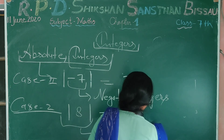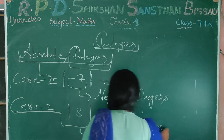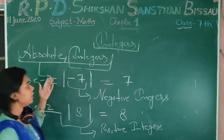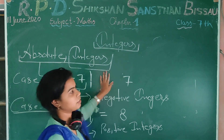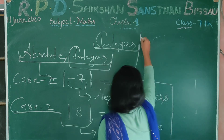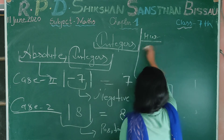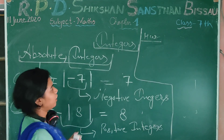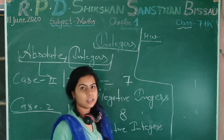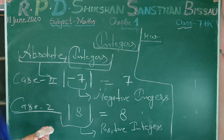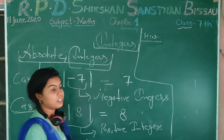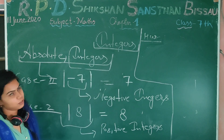Today I told you about integers — their categories, number line, and absolute integers. That is the basic knowledge for this exercise. Your homework is to write down the definitions and basic things about integers, absolute integers, number lines, and types of integers in your notebook. Thank you.